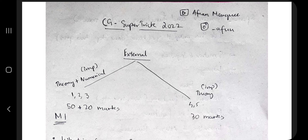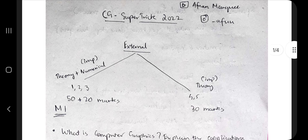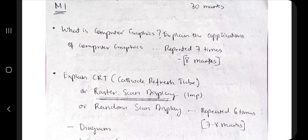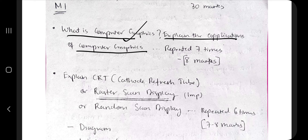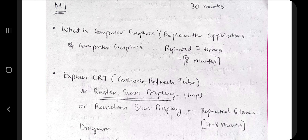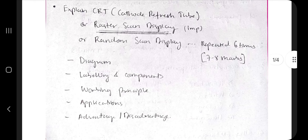Let me tell you what are the important concepts to focus on from each module. In Module 1, the common-sense question is: what is computer graphics and explain the applications of computer graphics. If you already know what is happening in the world you can write these answers in your own words. This is a very repeated concept asked many times in 1a or 2a — you can never miss this topic in the exam.